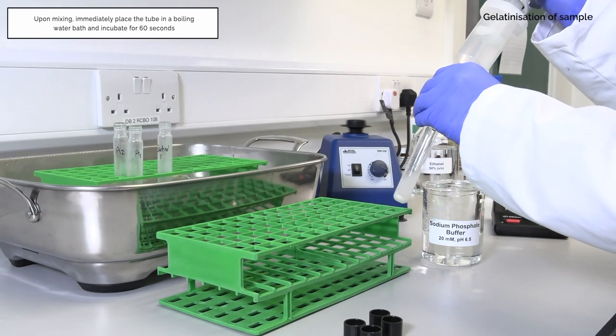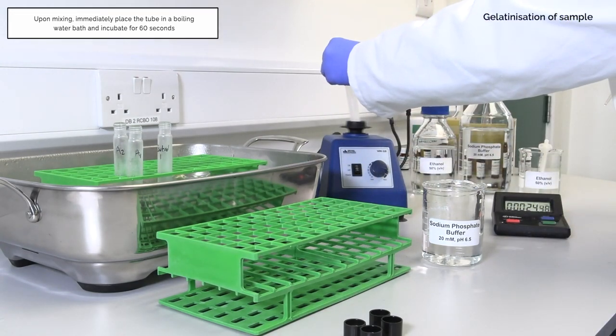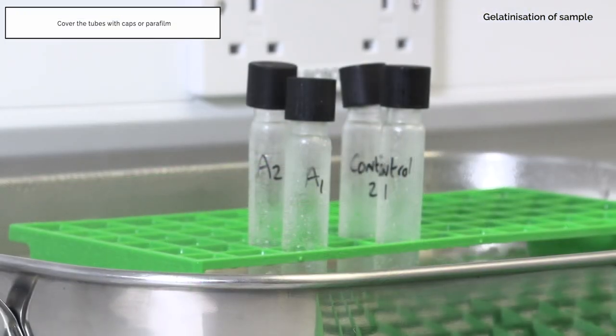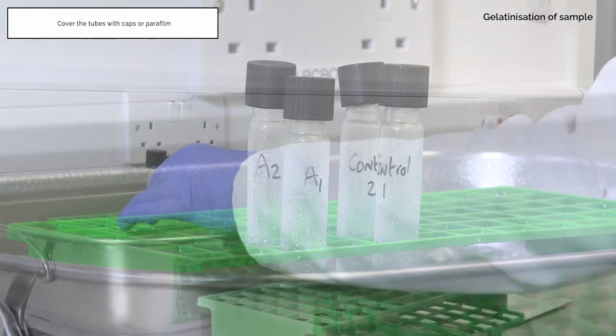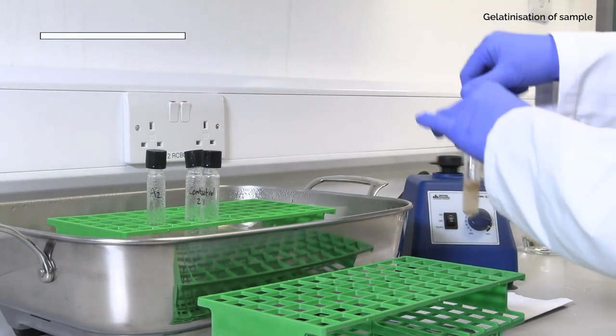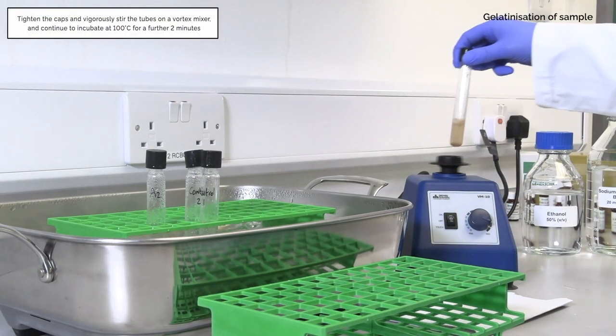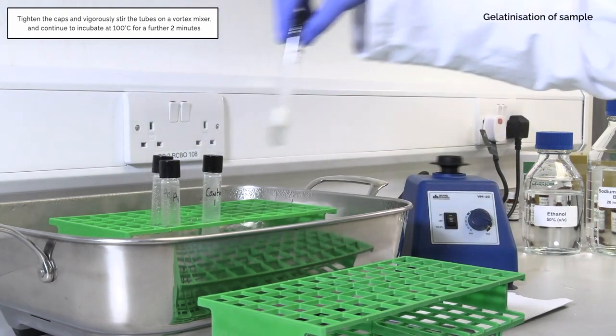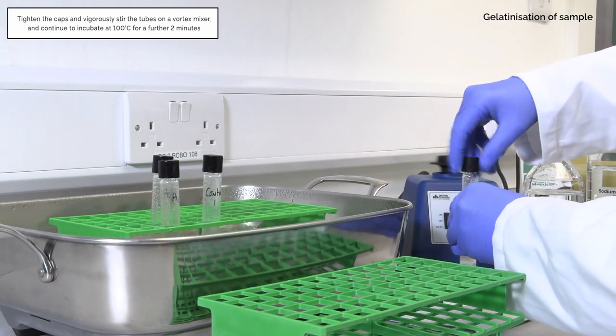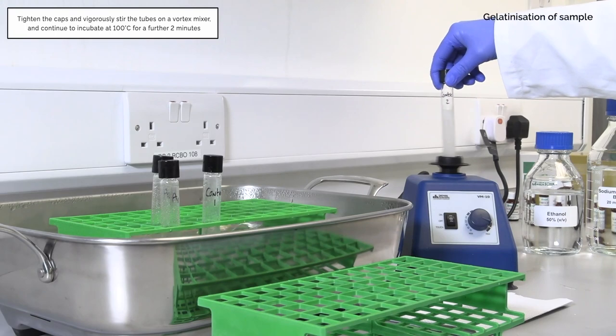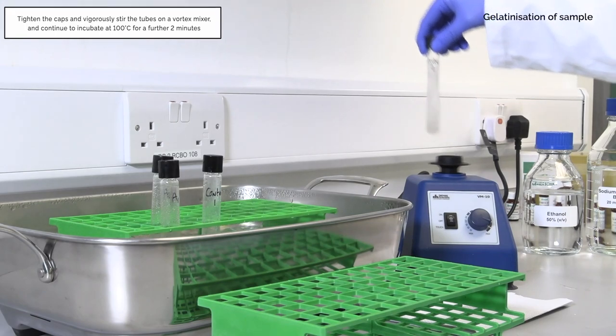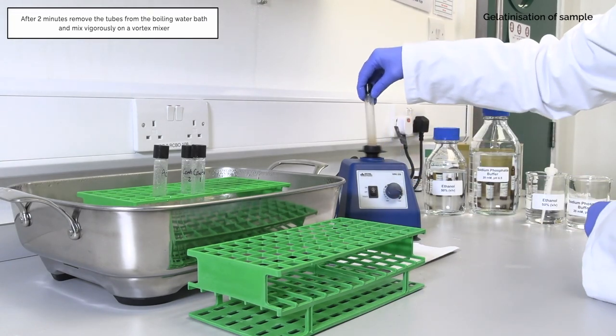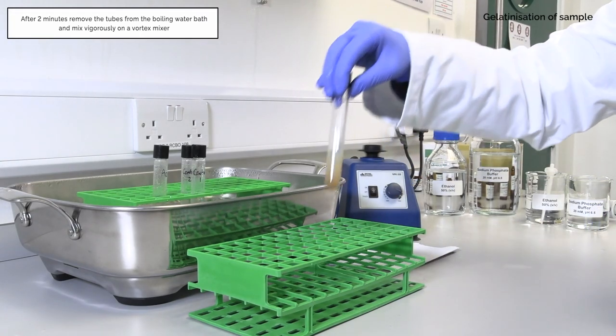Upon mixing immediately place the tube in a boiling water bath and incubate for 60 seconds. Cover the tubes with caps or parafilm. Tighten the caps and vigorously stir the mixture on a vortex mixer, and continue to incubate at 100 degrees Celsius for a further 2 minutes. After 2 minutes remove the tubes from the boiling water bath and mix vigorously on a vortex mixer.